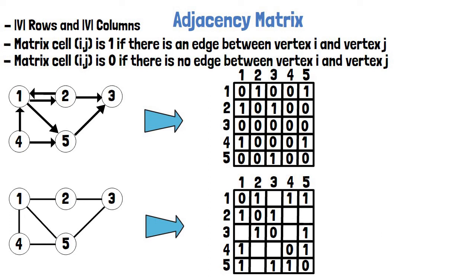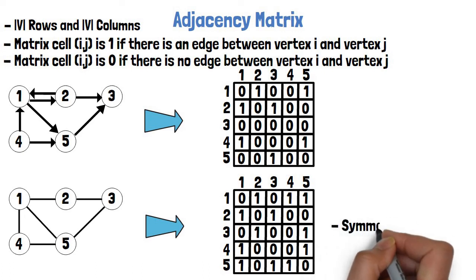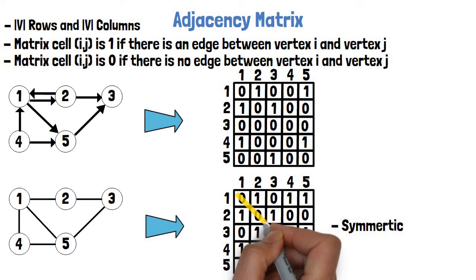Now that we've covered all edges, we fill the rest of the cells with 0s. It is important to note that the matrix for an undirected graph is symmetric above and below the main diagonal.